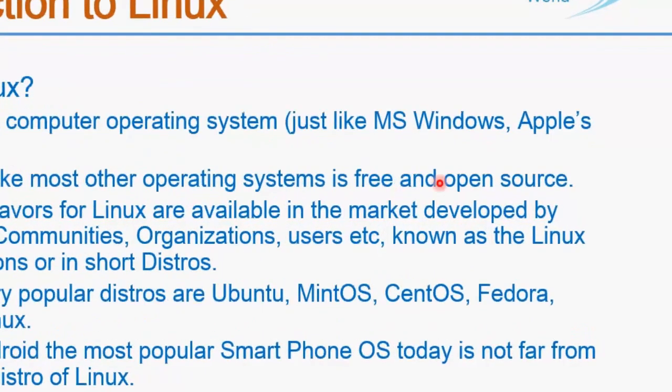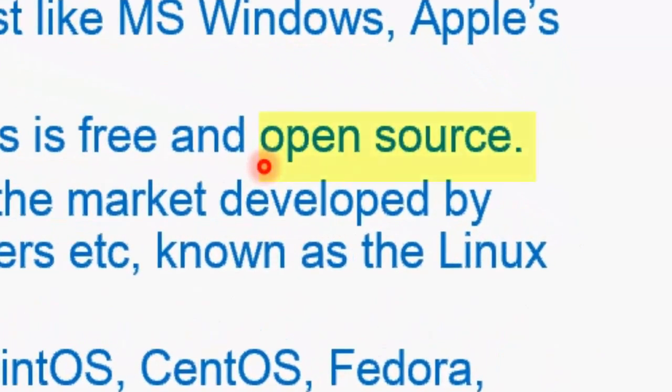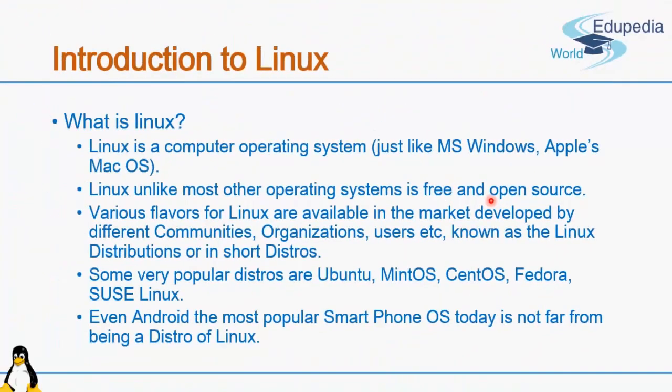Apart from that, it is open source. So what does this term open source mean? In terms of software, open source means that its source code is available for the public. So whatever code was written to make this particular software is available for you to download. You can open it, understand each and every line of the source code, reuse it in your own software, and you can also find certain bugs inside the software and commit those back to the website.